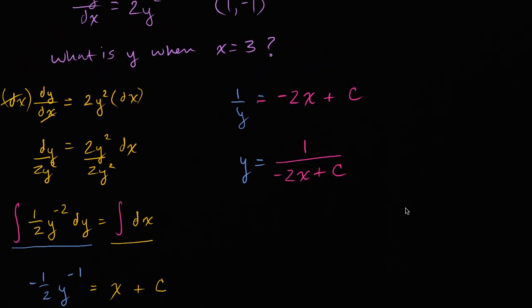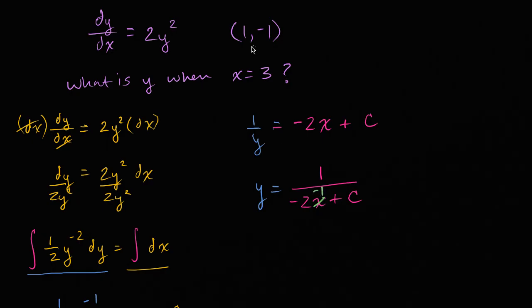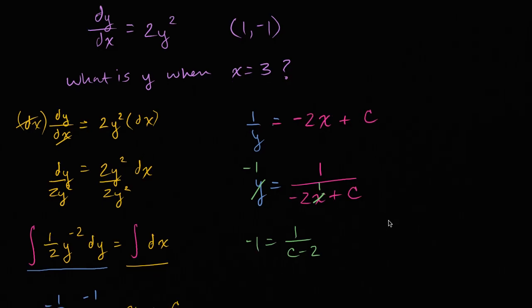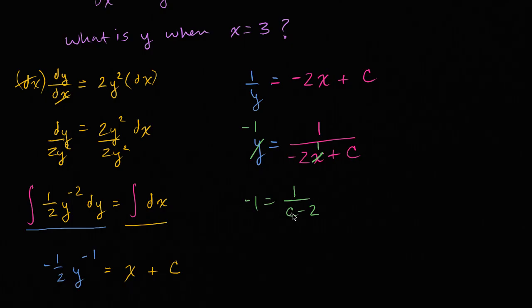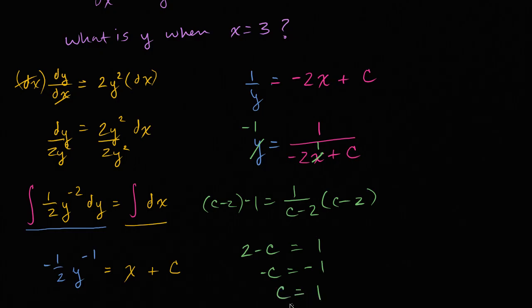Now we can use the information they gave us — the fact that our particular solution needs to go through the point one comma negative one — to solve for c. When x is one, y is negative one. So we get negative one is equal to one over negative two plus c, or c minus two. Multiplying both sides by c minus two gives us negative c plus two, or two minus c equals one. Subtracting two from both sides gives negative c equals negative one, and multiplying by negative one gives c equals one.